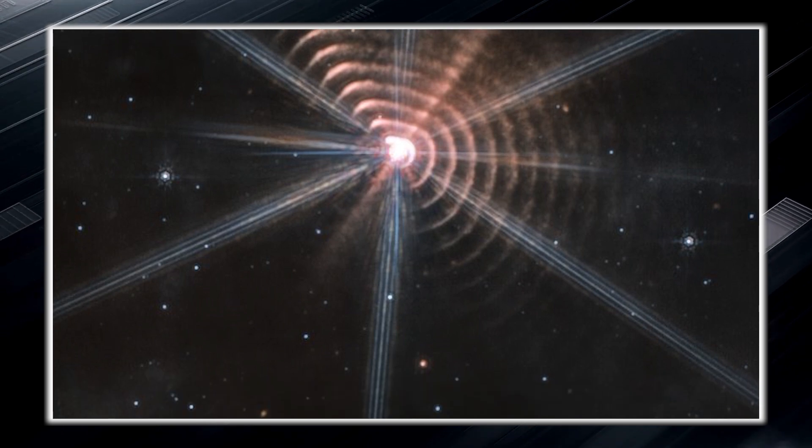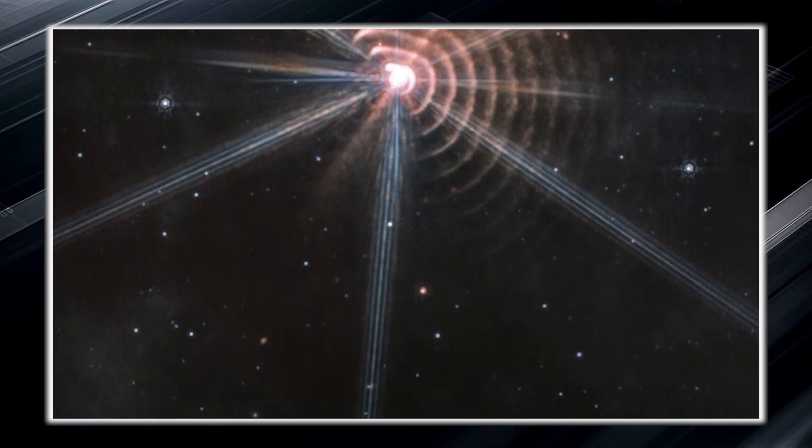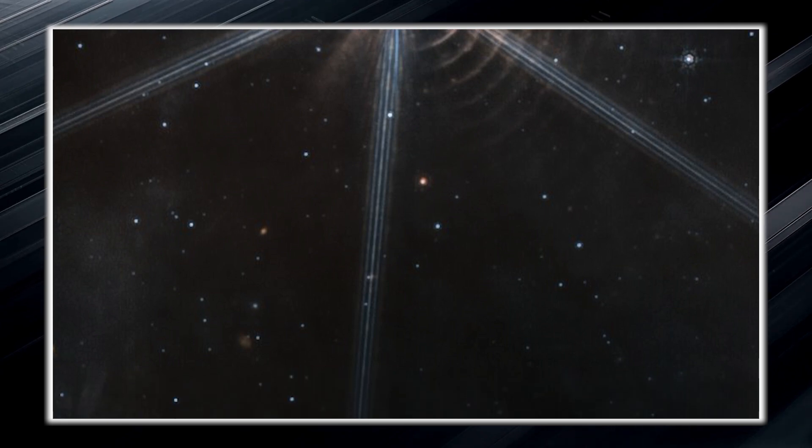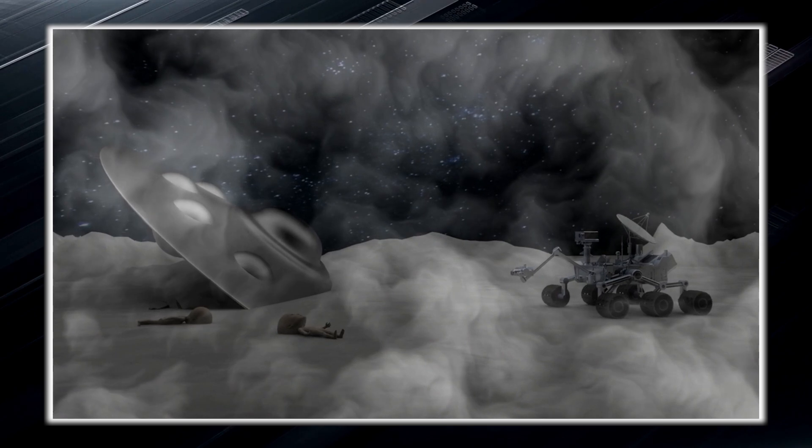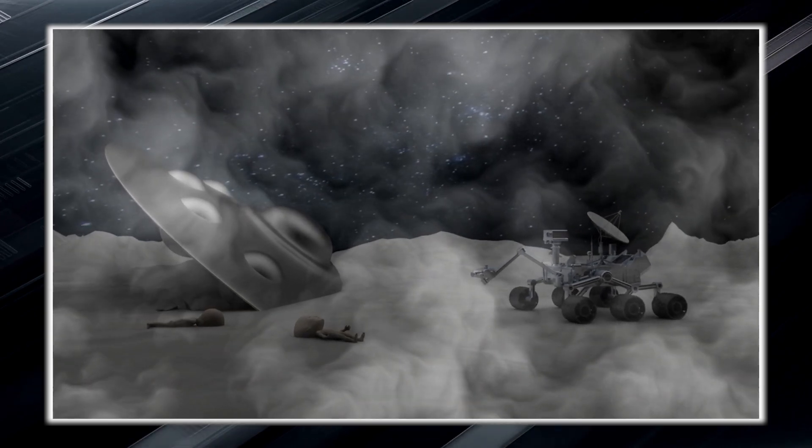What was striking, however, was that the circles were not perfectly round but had a somewhat square appearance. This immediately gave rise to theories about a possible extraterrestrial origin.